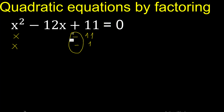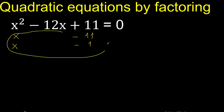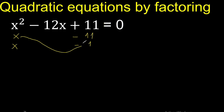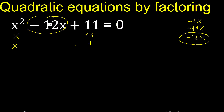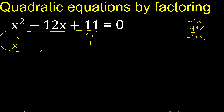Let's try minus, because here is minus — let's analyze if it is correct. X multiplied by minus 1 is minus 1X. Now X multiplied by minus 11 is minus 11X. Minus 12. Equal — therefore it is correct.